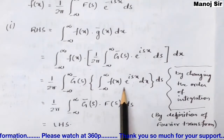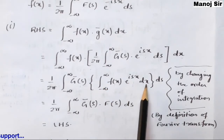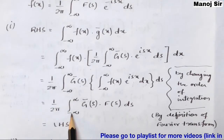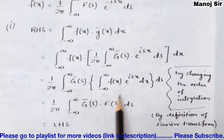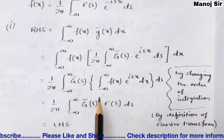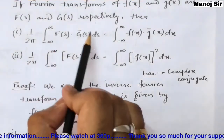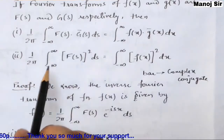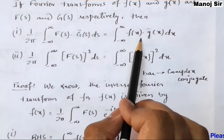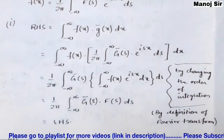By the definition of the Fourier transform, ∫₋∞^∞ f(x) · e^(isx) dx = F(s). So we get: (1/2π) ∫₋∞^∞ Ḡ(s) · F(s) ds, which is exactly the LHS. Therefore RHS = LHS, and the first Parseval identity is proved.